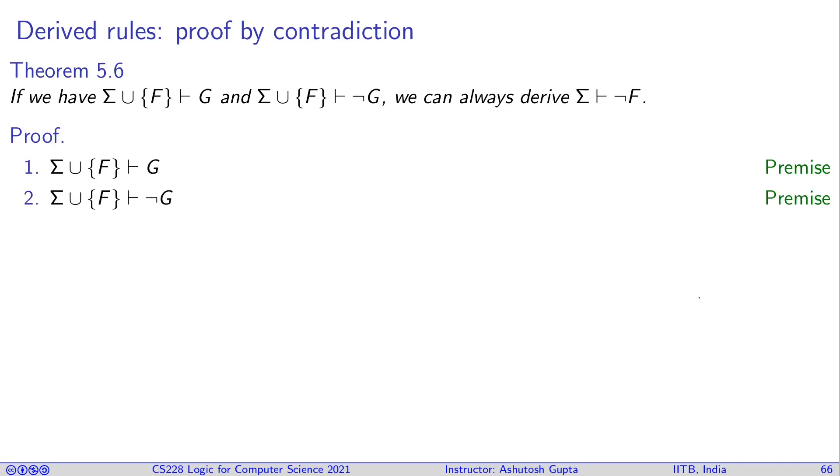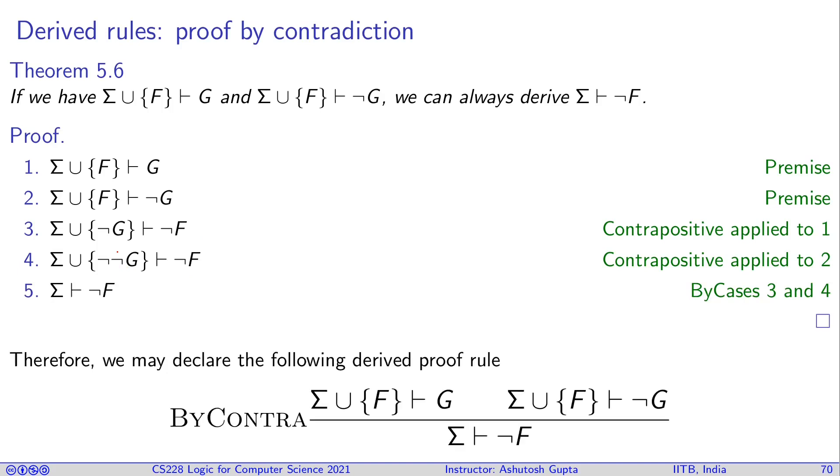Sigma union F gives G. Sigma union F gives not G. Now what do we do? We flip both of them. Not G comes forward, not F goes later to get sigma union not G proves not F. Now what do we do? We apply contrapositive to 2. That also gives sigma union not G proves not F. So we can obtain not G here and then not F there. Now what we can do is we can use by cases to derive not F from 3 and 4. And we obtain not F. And this we can call proof by contradiction.